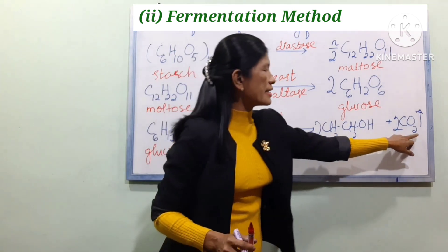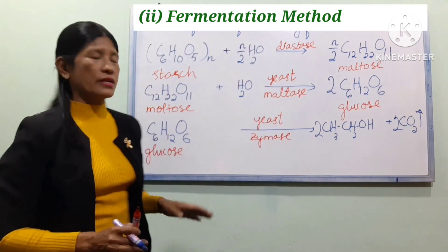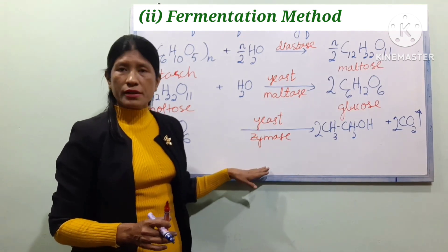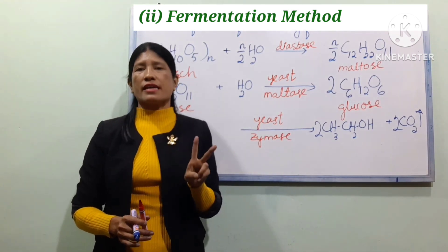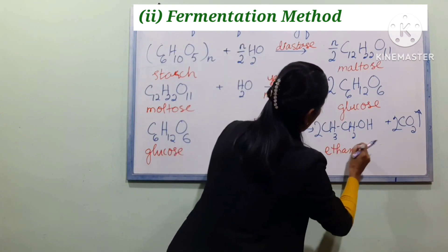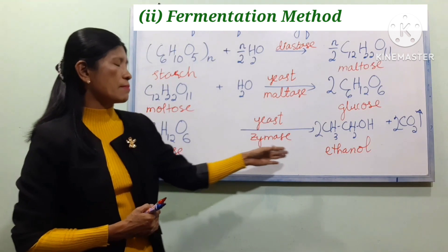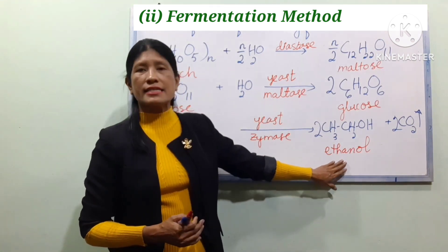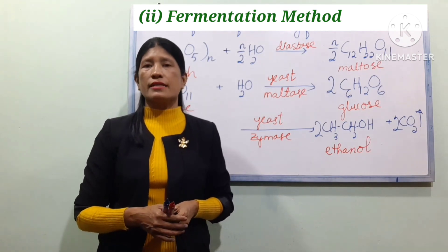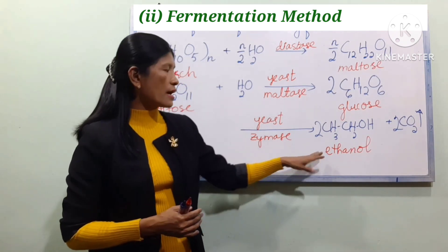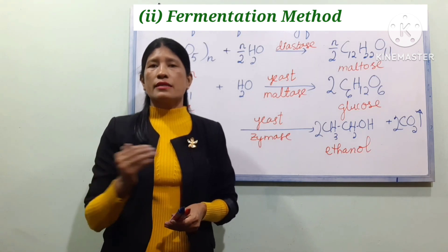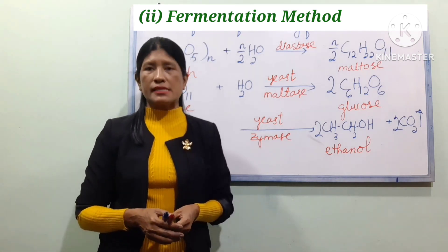Glucose and the enzyme zymase produce ethanol. If you ferment glucose you will obtain ethanol, about 11% ethanol product. This product also undergoes fractional distillation to produce a 95% ethanol product.